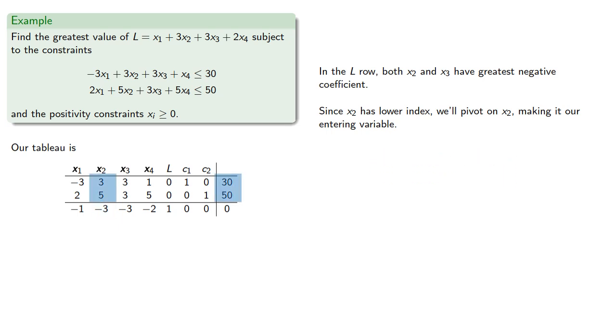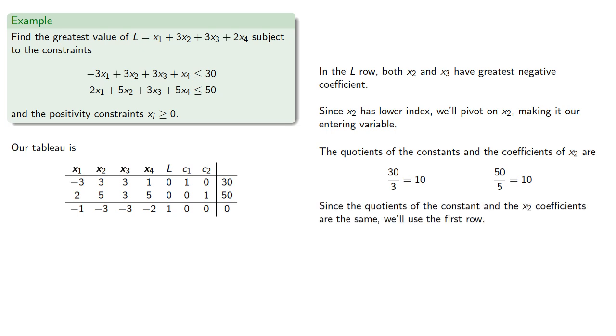We find the quotients of the constants and the coefficients of x2. Since the quotients of the constant and the x2 coefficients are the same, we'll use the first row, again our least indexed row. So c1 is going to be our exiting variable.